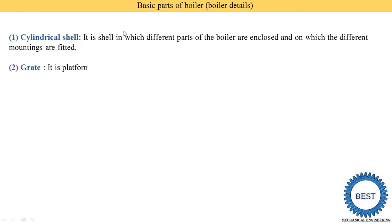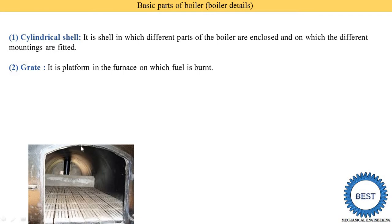The second part is the grate. The grate is one part of the furnace — it is the platform inside the furnace on which the fuel is burnt. Various fuels are placed on the grate for combustion purposes. Here I show you an image: this is the complete furnace and this is the door of the furnace. From this door, different fuel is supplied inside the furnace grate. The bottom part is known as the grate.